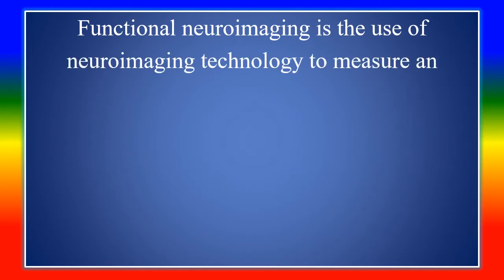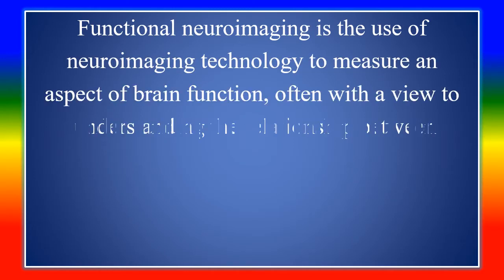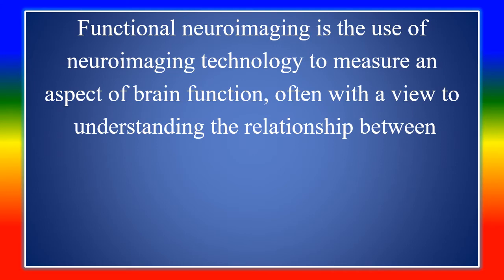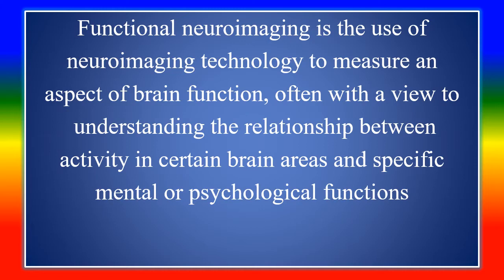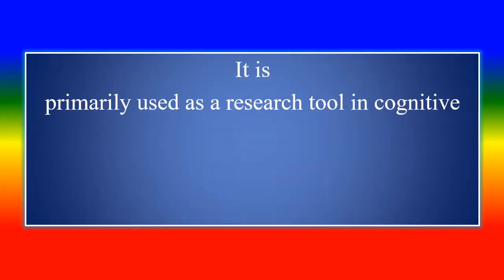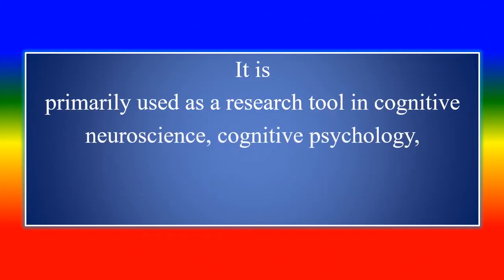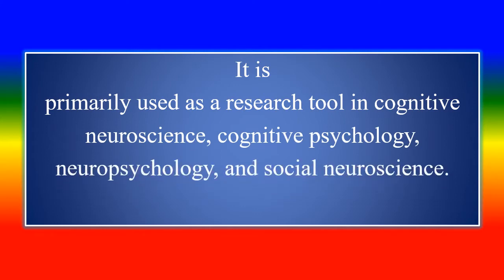Functional Neuroimaging is a principal technology used to measure an aspect of brain function, often with a view to understanding the relationship between activity in certain brain areas and specific mental or psychological functions. It is primarily used as a research tool in cognitive neuroscience, cognitive psychology, neuropsychology, and social neuroscience.